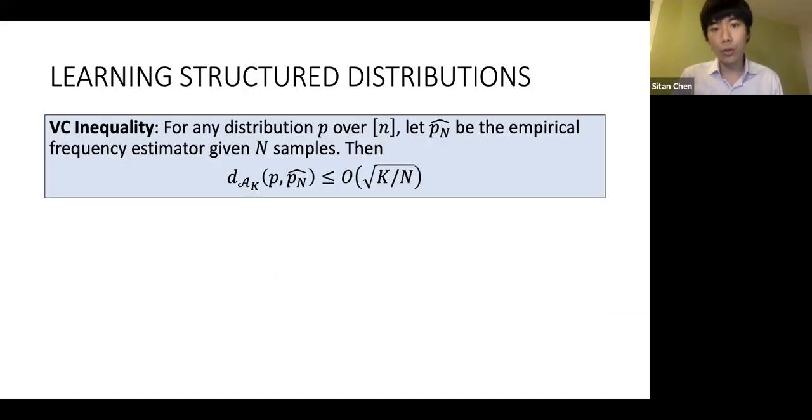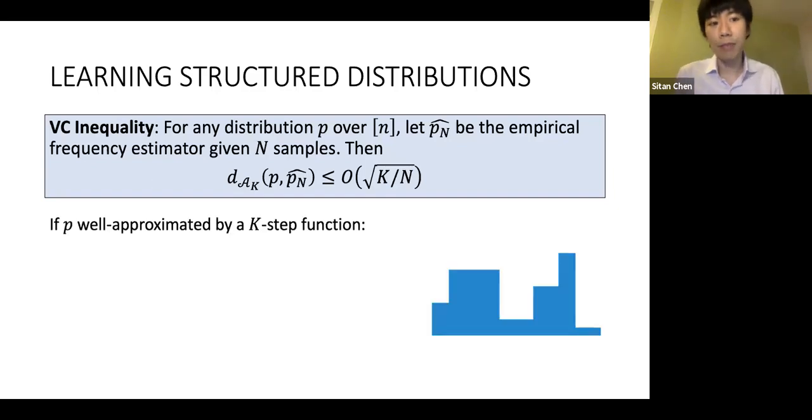So this says something about A_k, how can I now get some guarantee in L1? Well, the point is if my distribution p were structured, let's say it was some kind of histogram, so a piecewise constant function. Then I can draw enough samples so that the empirical estimator is close in A_k distance.